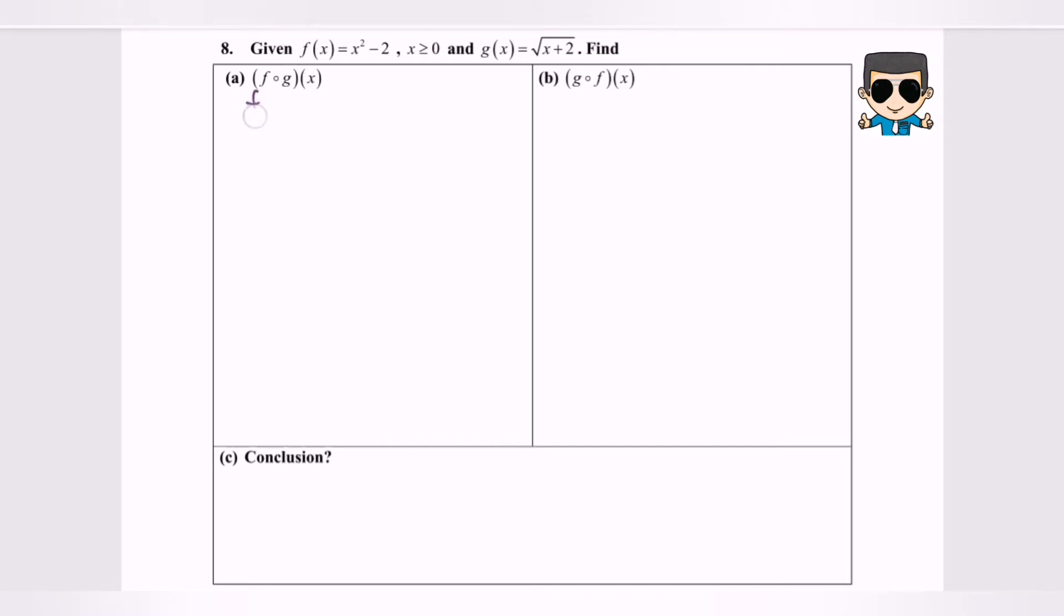So f composed with g, we will have f bracket g(x). Next I'm going to substitute the g(x), so f bracket square root of x plus 2.